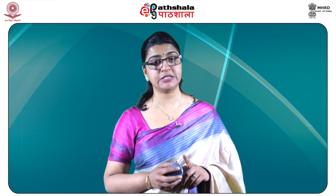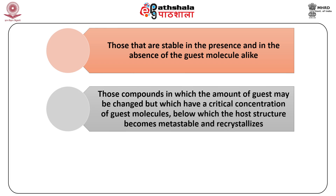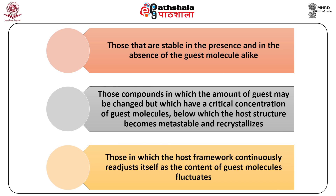Various other terms have been used to describe these complexes as occlusion compounds, educts, or clathorates. The scientist named Barer divided the inclusion compounds into three categories based on the varying concept of the host crystal: those that are stable in the presence as well as the absence of guest molecules alike; those in which the amount of guest may be changed but which have a critical concentration of guest molecules below which the host structure becomes metastable and recrystallizes; and those in which the host framework continuously readjusts itself as the content of guest molecules fluctuates.